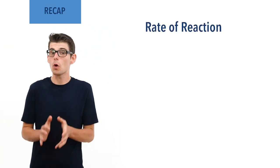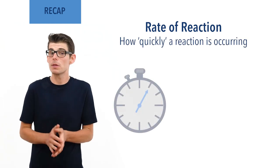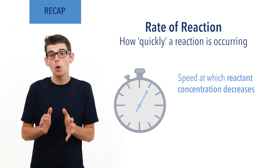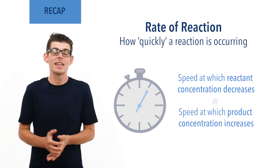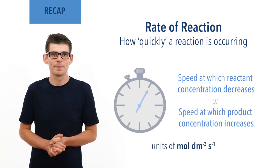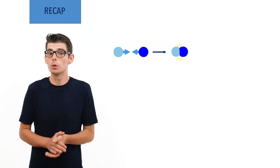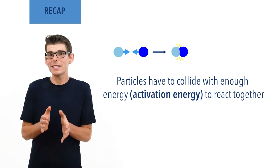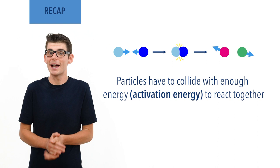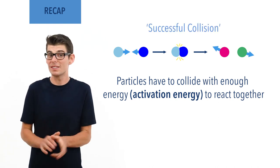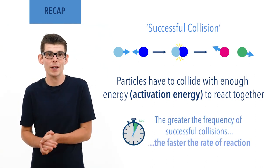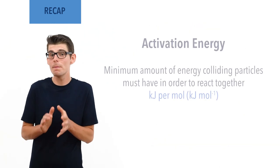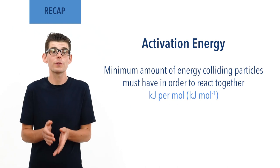Before we talk in detail about Maxwell-Boltzmann distributions, there are a few essential ideas you need to be comfortable with. Rates of reaction describe how quickly reactions are occurring. They can be measured in terms of the speed at which reactant concentration decreases or the speed at which product concentration increases, giving the units mole per decimetre cubed per second. In order for a reaction between two substances to occur, particles of each must collide together. If a collision happens with enough energy — the activation energy — and this leads to the formation of new products, the collision is described as successful.